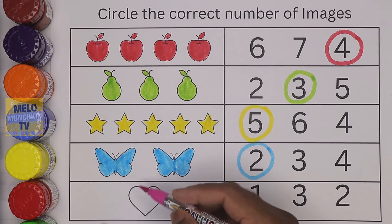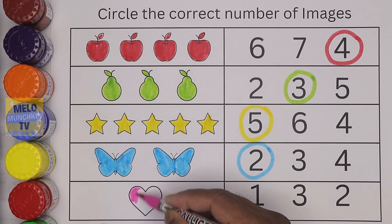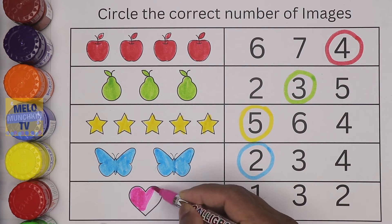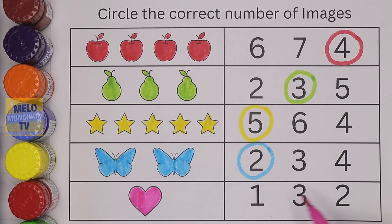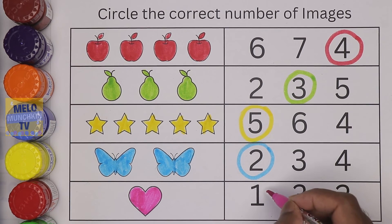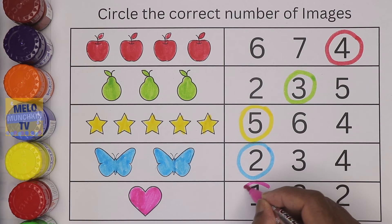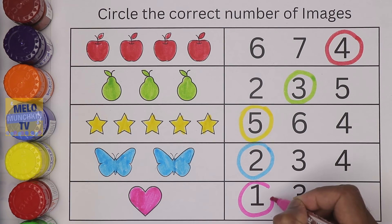Next, I'll take pink color and color this heart. How many hearts? Only one! So we need to find number one. This is number two, this is number three, and this one is number one. This is the correct answer!